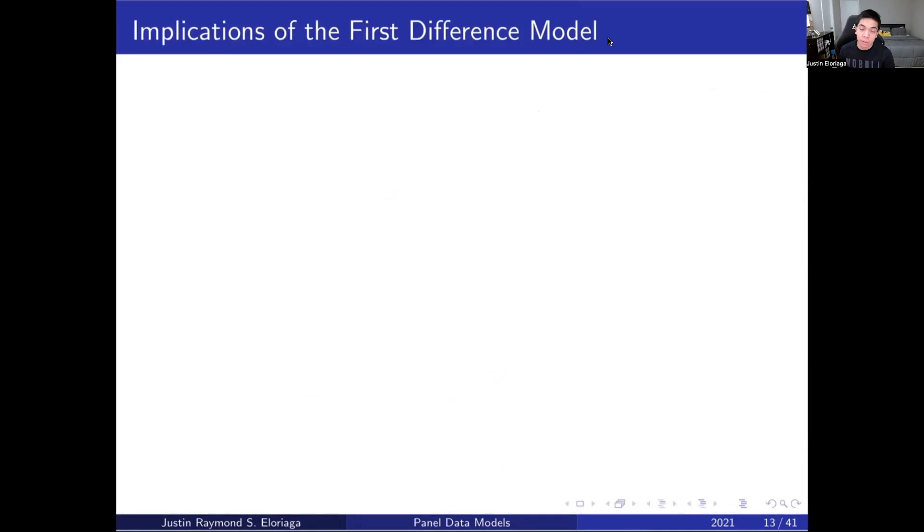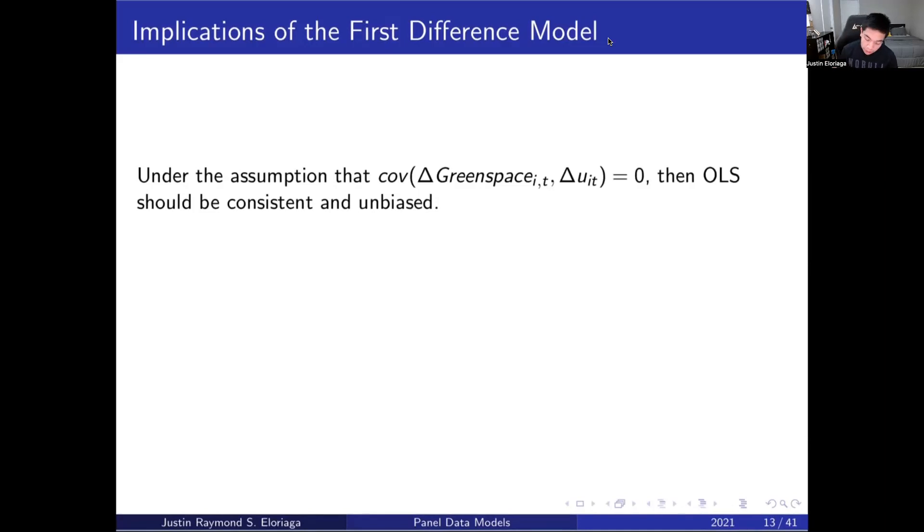Now, what are the implications of the first difference model? Well, under the assumption that the covariance term is going to be equal to zero, then OLS should be consistent and unbiased. We no longer have the eta_i term, which we know is alpha_i plus u_it, simply because that alpha_i is gone in the first differences model, so we're only left with delta u_it. The only thing we need to worry about is how the difference in green space and that delta u_it term are related to each other. If that's equal to zero, then OLS should be consistent and unbiased.